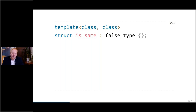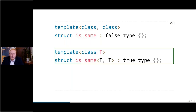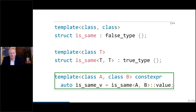Now we have to get the true case, and for that we use template specialization. We take one template argument T and say `is_same` has the same template argument on both sides — both types are the same type — and this obviously is the true type. Now we have 100% covered. This is the implementation for `is_same`. I still have room on the slide to present the C++17 version, which is a templated constexpr variable that takes two types A and B and forwards to the same structure.